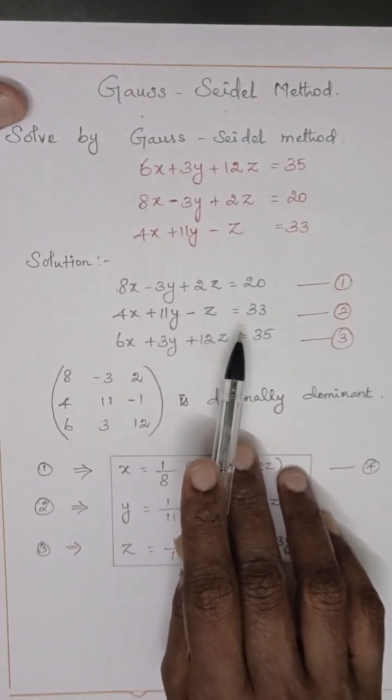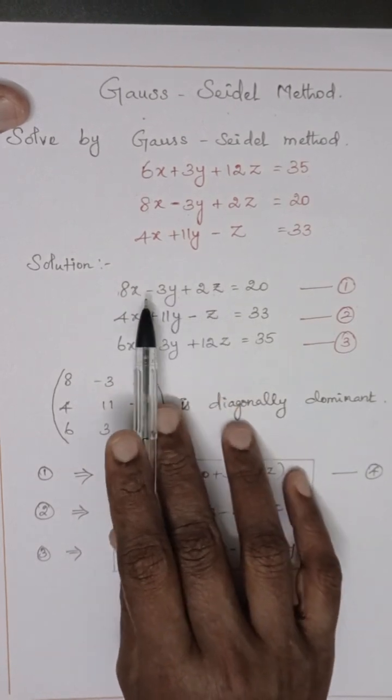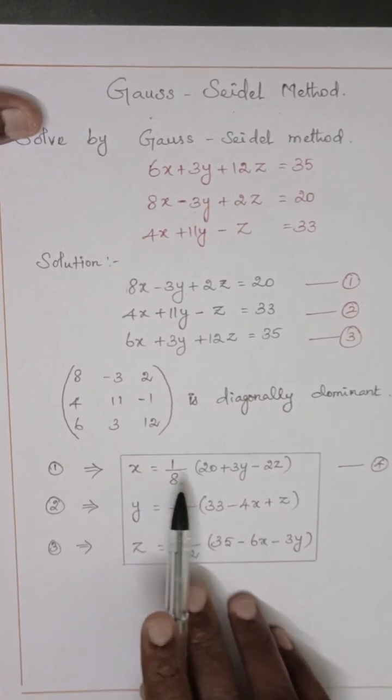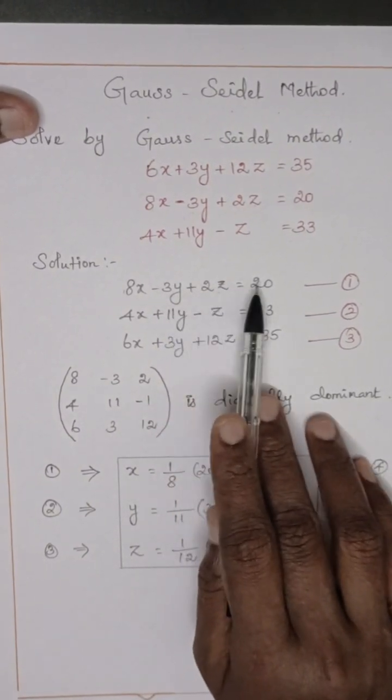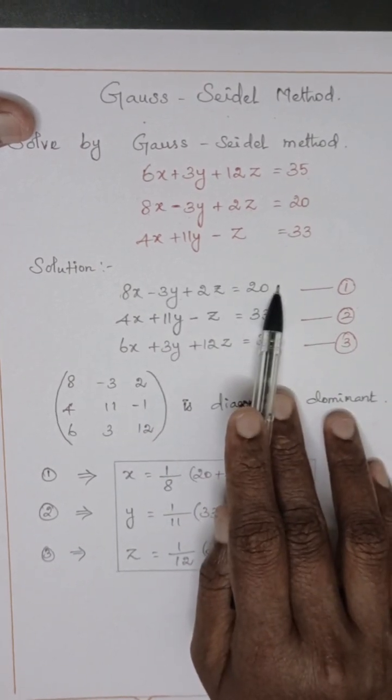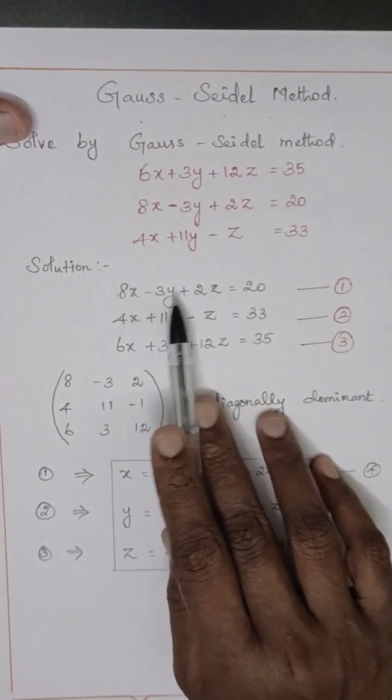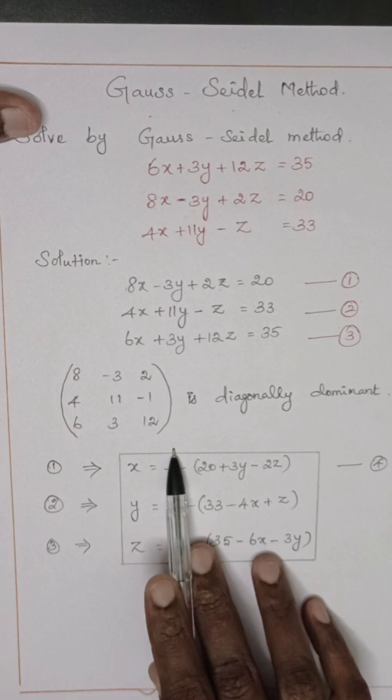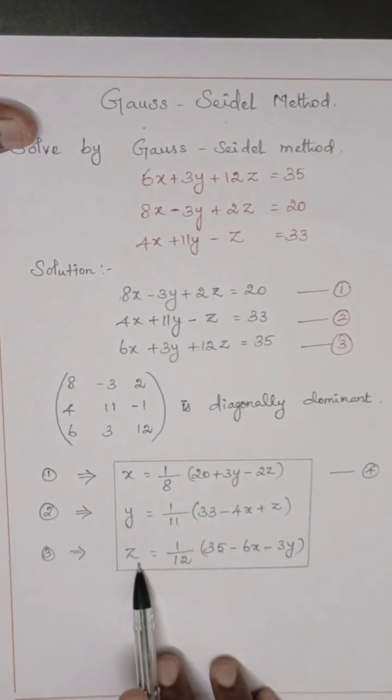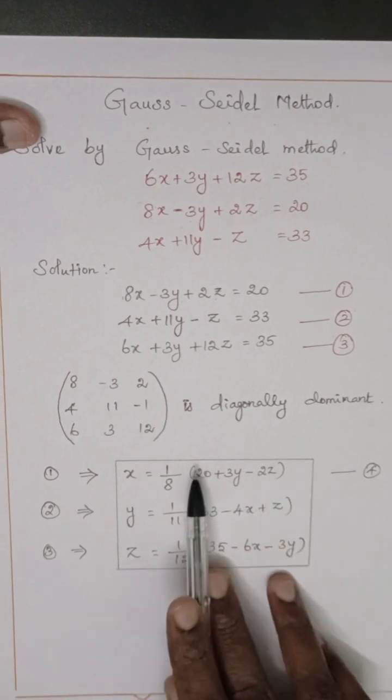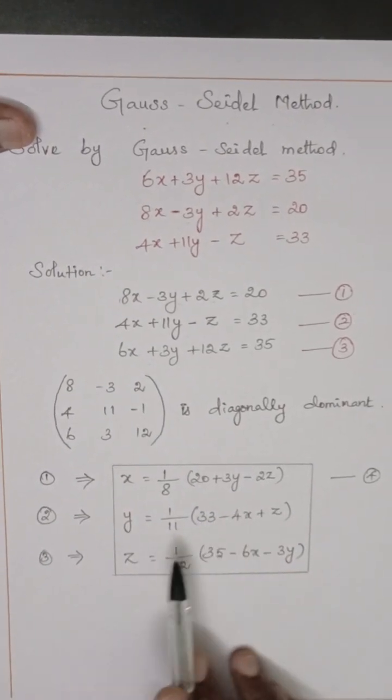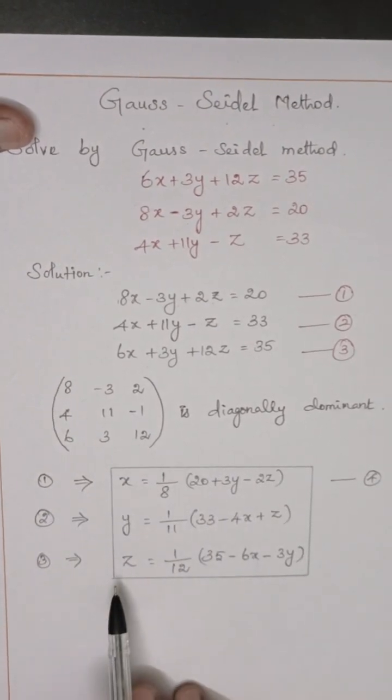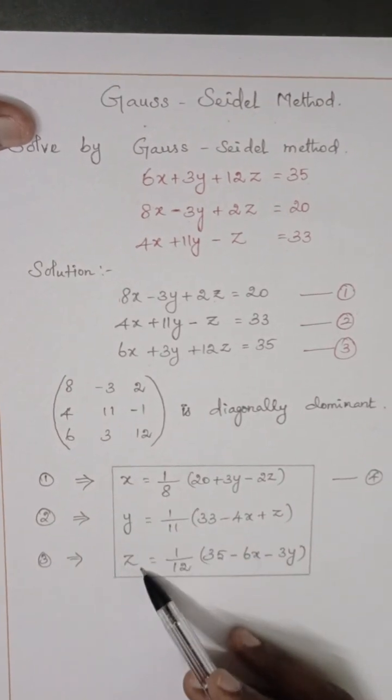In the equations, we create x in terms of y and z, we have to find x value, y value, z value. First equation we write x value: x equals 1 by 8 times 20 plus 3y minus 2z. Similarly, y and z. Now we have x equals 1 by 8 into this term, y equals 1 by 11 into this term, and z equals 1 by 12 into this term.